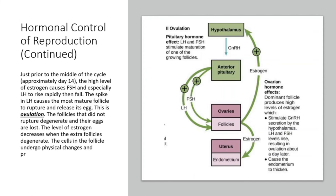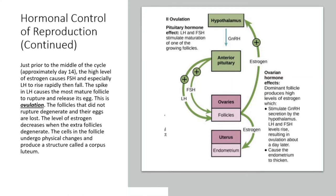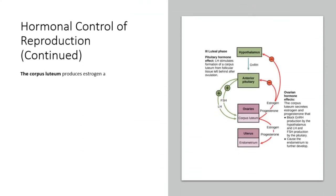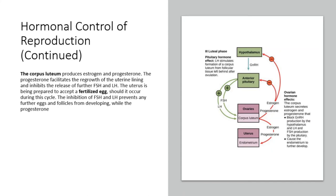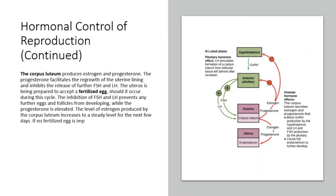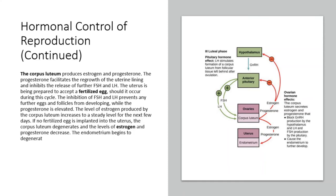The level of estrogen decreases when the extra follicles degenerate. The cells in the follicle undergo physical changes and produce a structure called the corpus luteum. The corpus luteum produces estrogen and progesterone. The progesterone facilitates the regrowth of the uterine lining, and inhibits the release of further FSH and LH. The uterus is being prepared to accept a fertilized egg, should it occur during this cycle. If no fertilized egg is implanted into the uterus, the corpus luteum degenerates and the levels of estrogen and progesterone decrease. The endometrium begins to degenerate as progesterone levels drop, initiating the next menstrual cycle.